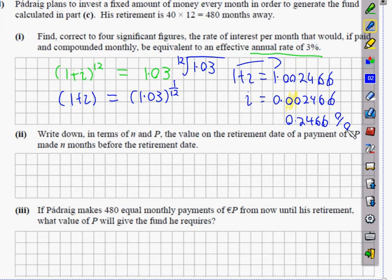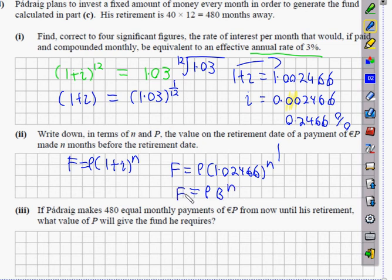Write down in terms of n and p, the value at the retirement date of p made n months in advance before the retirement date. If I retire in here, the longer my payment that I make first has the most time to accumulate value. So therefore, my final value is equal to (1+i)^n, the power of how many months it's in there for. So F therefore is going to be equal to p times 1.002466^n. Or in our language, p times B^n. Because we're using B. In this question for us, B is going to be the 12th root of 1.03.